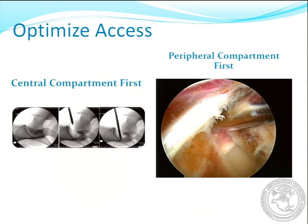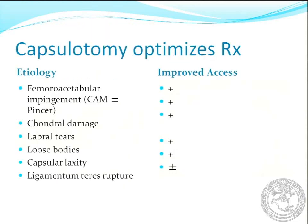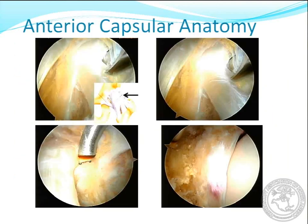Optimize your access. I can't tell you how often I tell people to do a capsulotomy — it seems like everybody's doing some form of capsulotomy now. Either go central or peripheral first, whichever you're comfortable with, but make sure you don't have a problem getting central. If you have a problem getting central, do your capsulotomy first, trim your rim first, and then go in. Capsulotomy will optimize your environment, make it a much easier procedure, and make it more like an open procedure done arthroscopically.